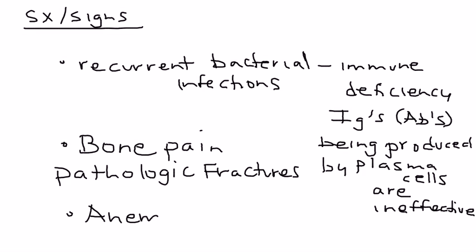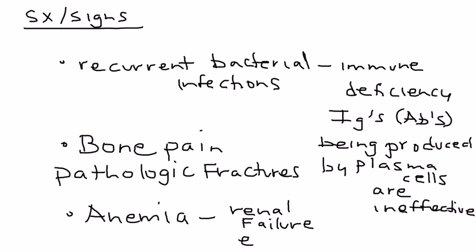The last sign and symptom to discuss is anemia. Anemia occurs because of renal failure — calcium and light chains depositing in the kidney cause renal failure. And renal failure results in decreased erythropoiesis, because erythropoietin is produced by the kidney and essentially helps build red blood cells.